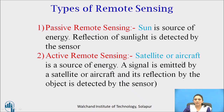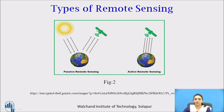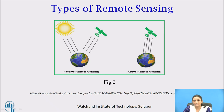In active remote sensing, the satellite or aircraft is the source of energy. A signal is emitted by the satellite or aircraft, and its reflection by the object is detected by the sensor. In the diagram, the first image shows passive remote sensing — sun rays fall on Earth and reflected rays are captured by the satellite sensor. The second image shows active remote sensing — rays are emitted from the satellite itself, and its sensor captures the reflected rays.